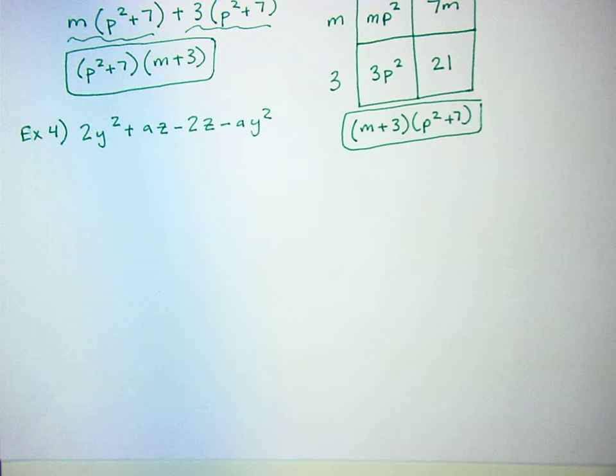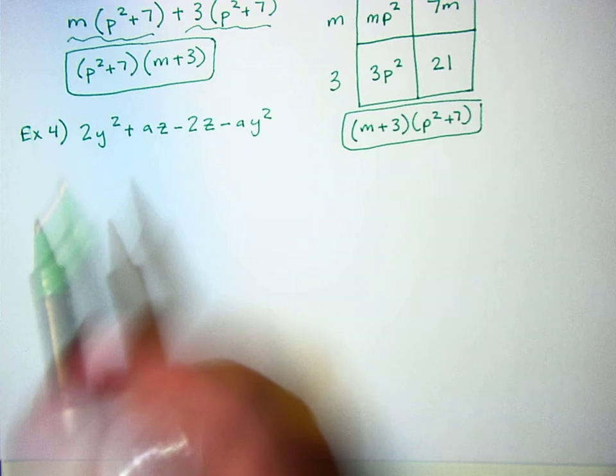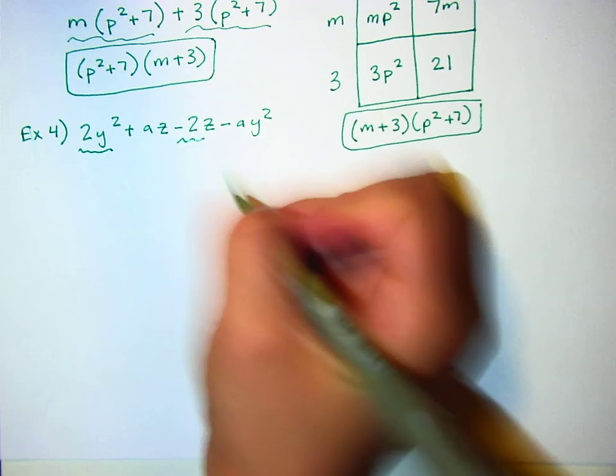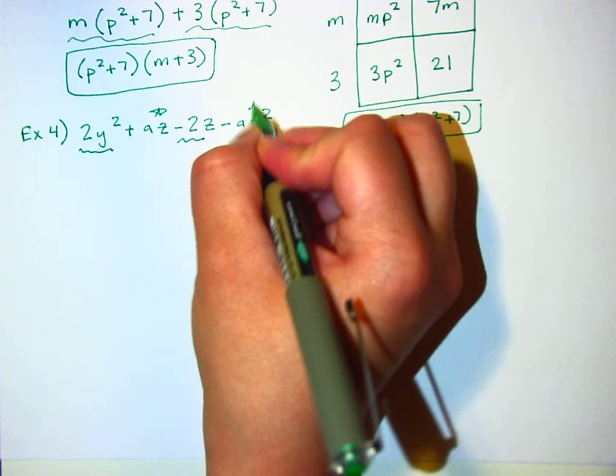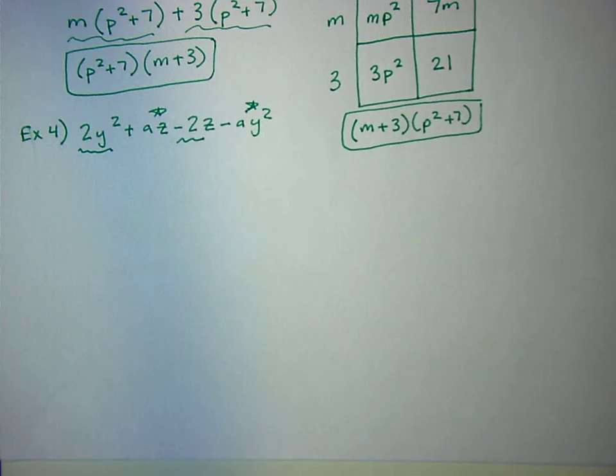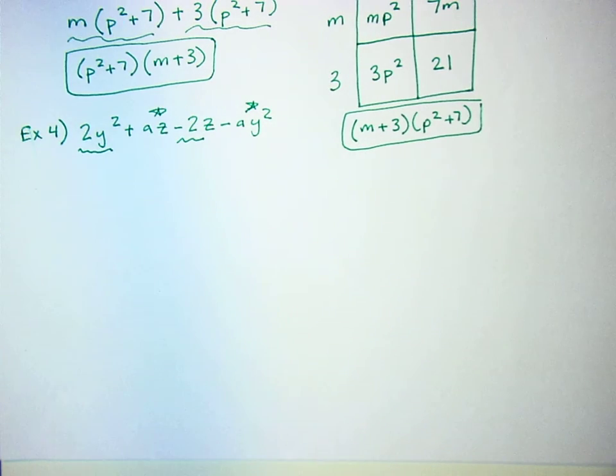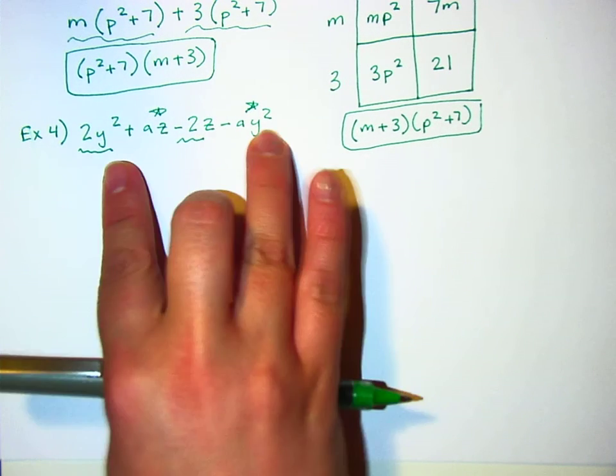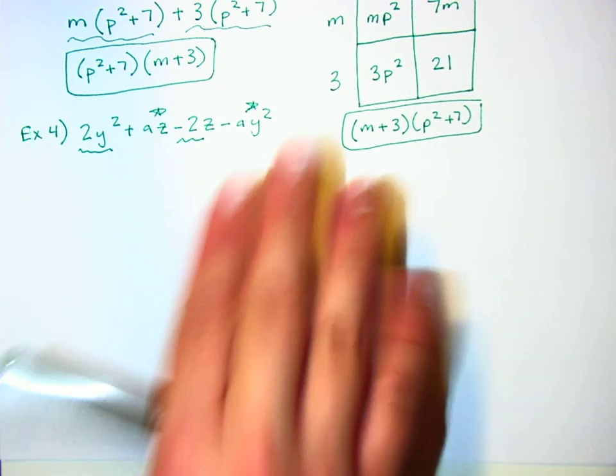First thing I'm going to do is rearrange things. So I'm going to put this one and this one next to each other, and this one and this one next to each other, because I see that the second two have a's involved, and these two have 2's involved, and you've got the y squared's too. You can do this in a lot of different ways.